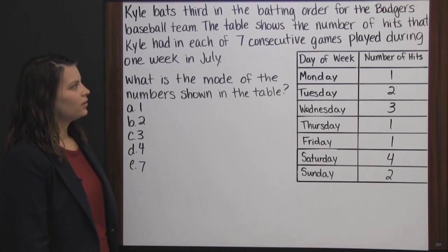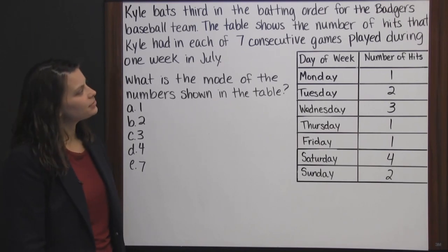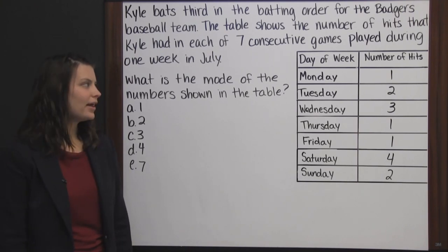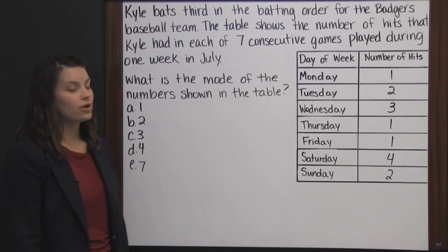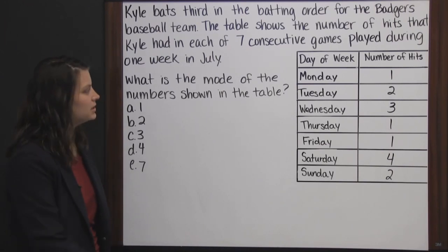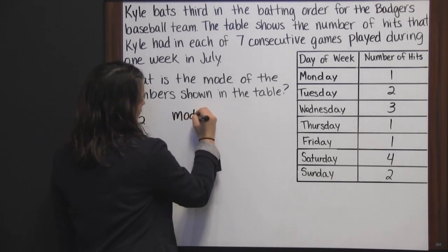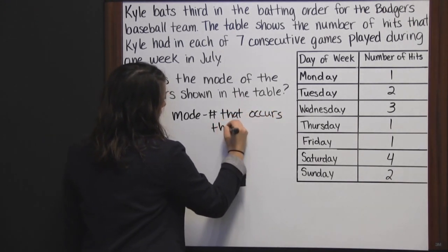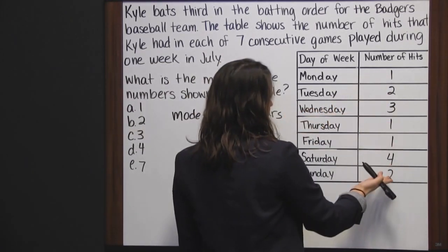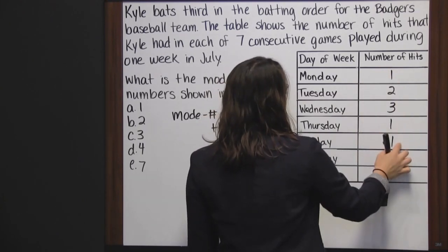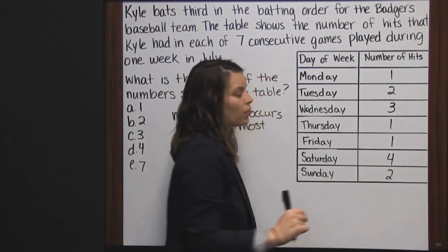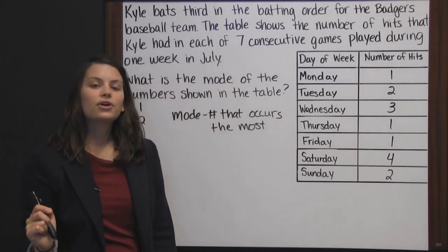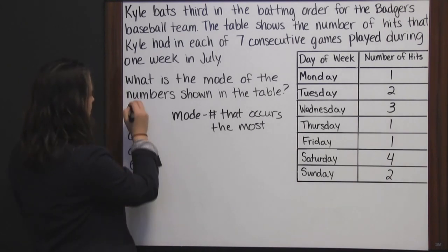Kyle bats third in the batting order for the Badgers baseball team. The table shows the number of hits Kyle had in each of seven consecutive games in July. What is the mode of the numbers shown in the table? Mode means the number that occurs the most. Out of these numbers, one occurs three times, two occurs twice, three occurs once, and four occurs once. So the number that occurs the most — the mode — is the number one.